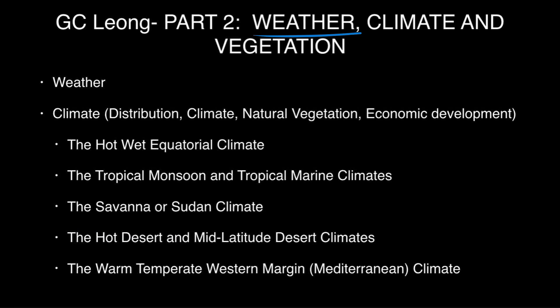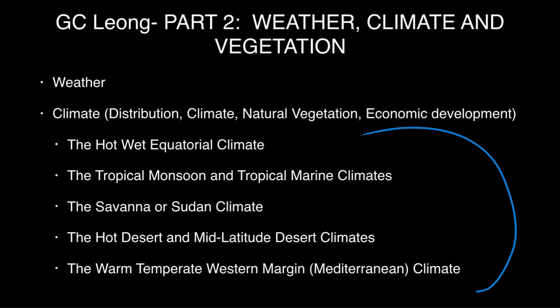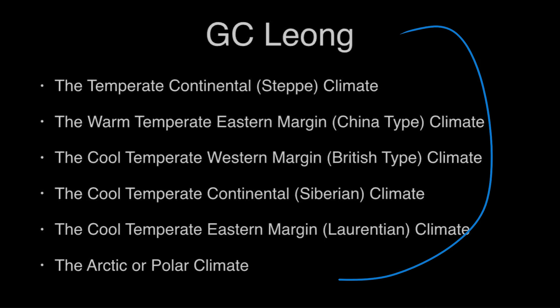Part Two of GC Leong covers Weather, Climate, and Vegetation. If you have read basic NCERT notes, Part Two is not required. You can read the first two chapters on weather and climate, but no need to go into detail because it is covered in painful detail that UPSC mostly doesn't ask. Knowing just five to six lines about each climate type and 20 facts per climate type is more than enough. It's up to you if you want to read more.